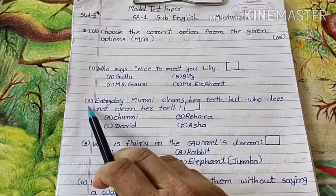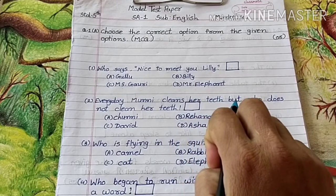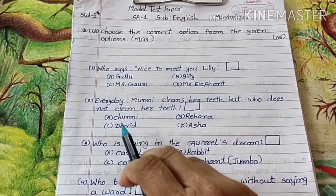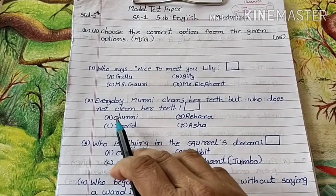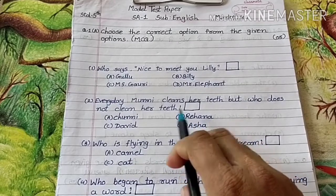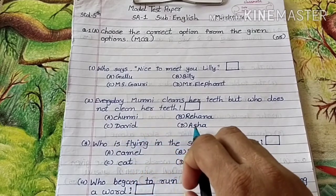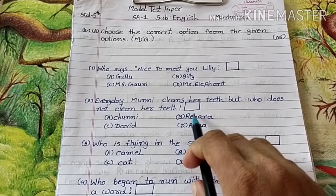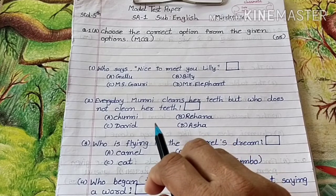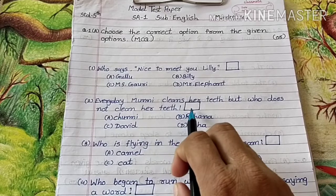Second: Every day Muni cleans her teeth, but who does not clean her teeth? Let's look at the options: A. Chunni, B. Rihana, C. David, D. Asha. So which option is correct here? Who doesn't brush every day? Chunni. So we will write A here.